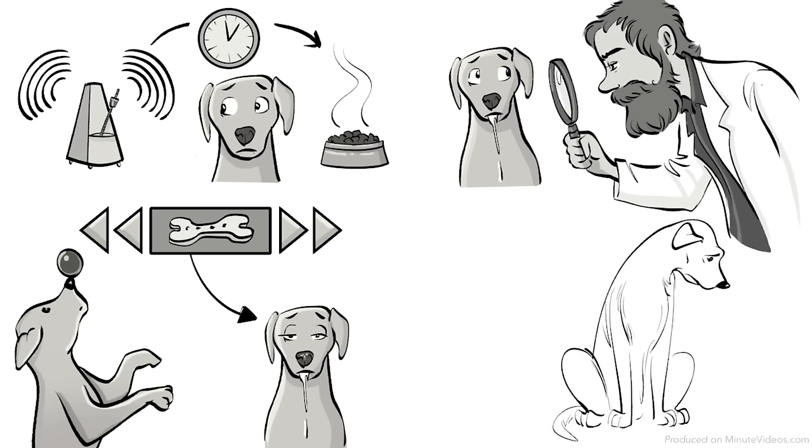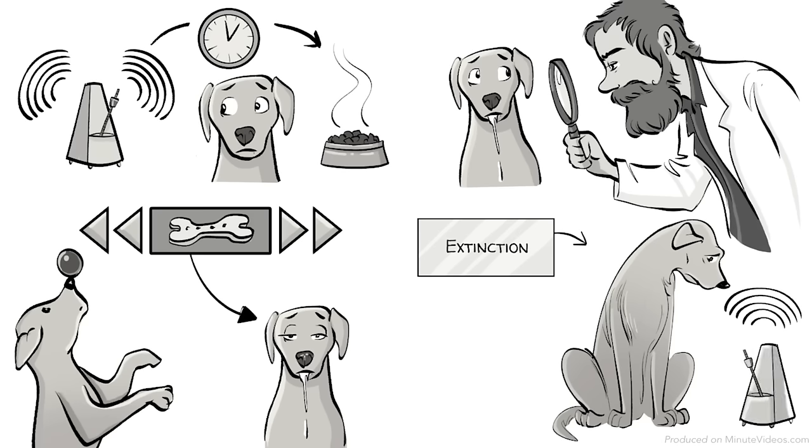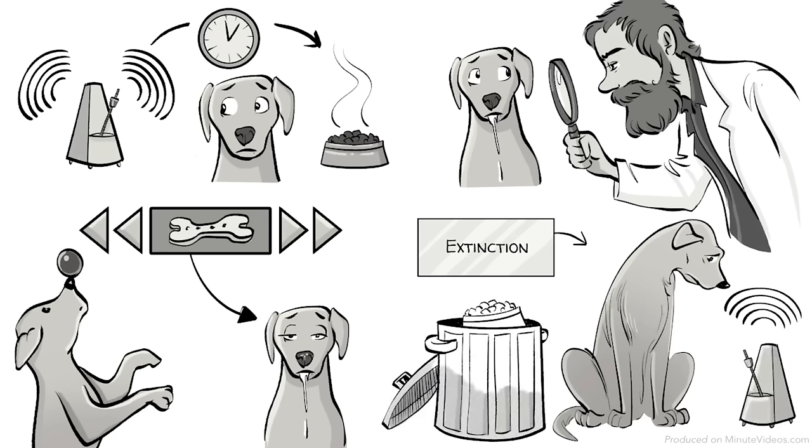Four, we can almost entirely undo the conditioning. This happens through extinction when we repeatedly present the conditioned stimulus in the absence of the unconditioned stimulus.